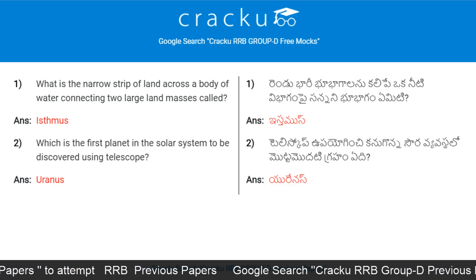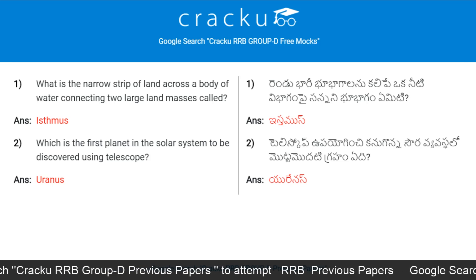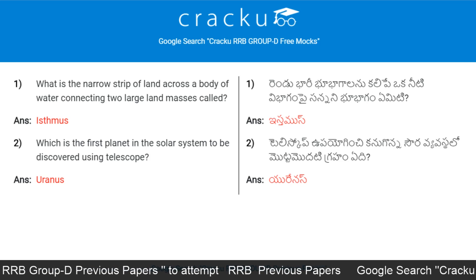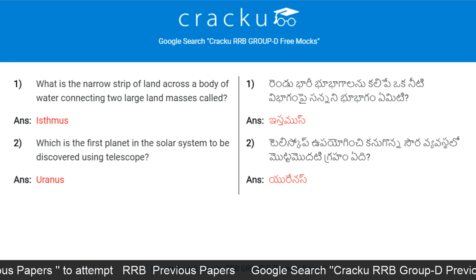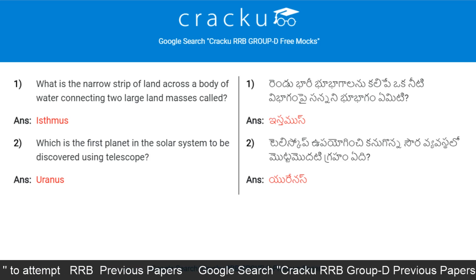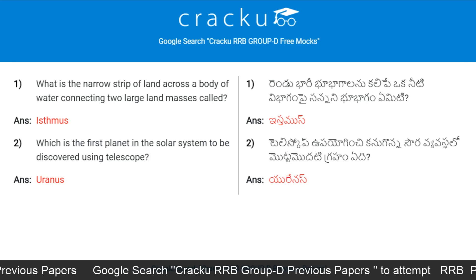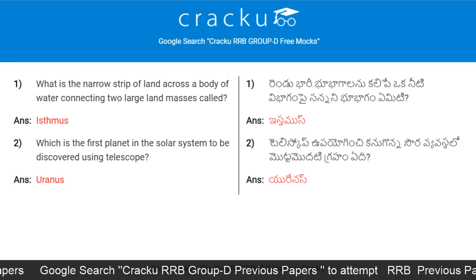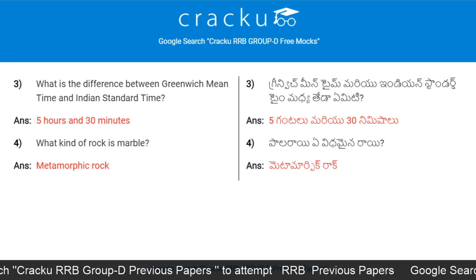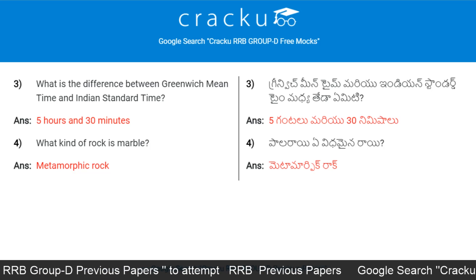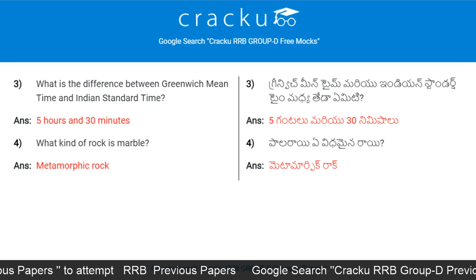Today's first question: What is the narrow strip of land across a body of water connecting two large land masses called? Isthmus. Which is the first planet in the solar system to be discovered using a telescope? Uranus. What is the difference between Greenwich Mean Time and Indian Standard Time? 5 hours and 30 minutes.